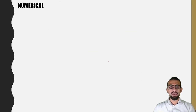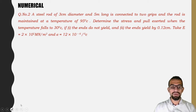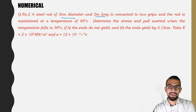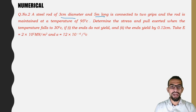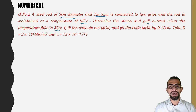Moving to the second problem: A steel rod of 3 cm diameter and 5 meters long is connected with two grips, and the rod is maintained at a temperature of 95°C. Find the pull exerted and stress when the temperature falls to 30°C.